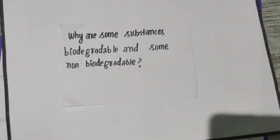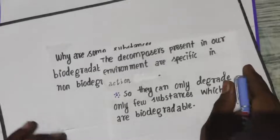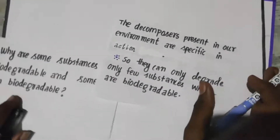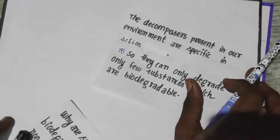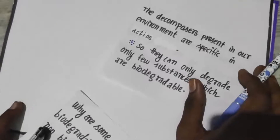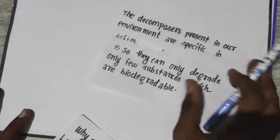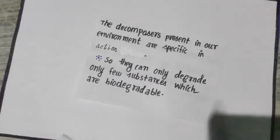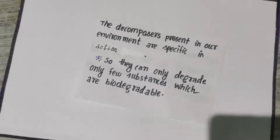So I am going to give the answer here. See here students, the decomposers which are present in our environment are specific in their action — similar to the enzyme, as we have already discussed in class. So decomposers break down material because they are specific in their action.